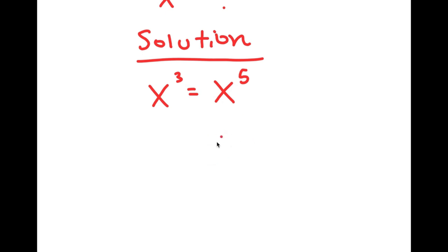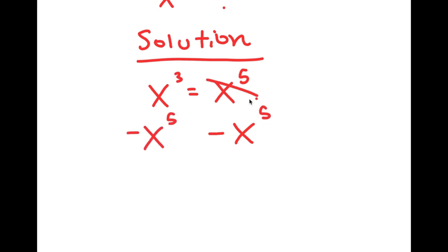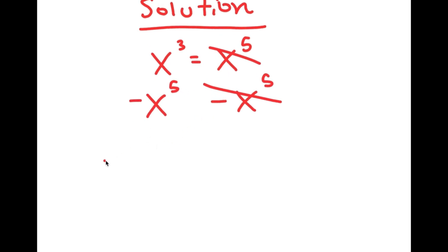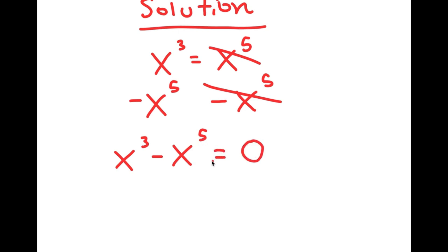What I'm first going to do is subtract x to the power of 5 on both sides. These two cancel out, and I get x to the power of 3 minus x to the power of 5 is equal to 0.